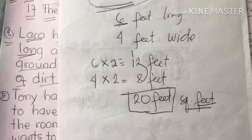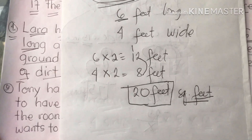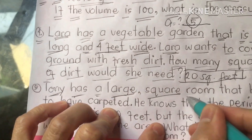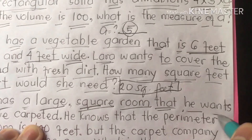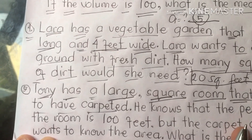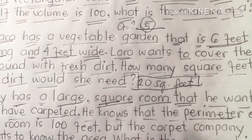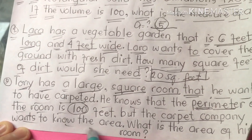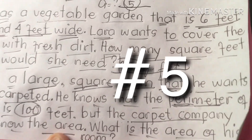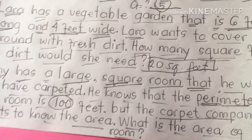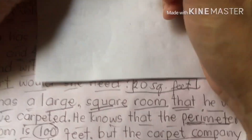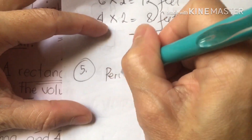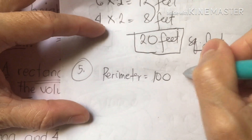Now let's proceed to number five. Tony has a large square room that he wants to have carpeted. He knows that the perimeter of the room is 100 feet. The carpet company wants to know the area. What is the area of this room? The perimeter of his room is 100 feet.